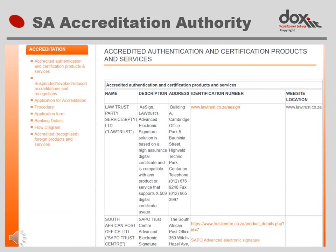The page on the South African Accreditation Authority website lists the certification authorities from which a certificate can be bought that will be legally valid within South Africa. The list is not very long — it includes only two options. At the bottom, you will see the South African Post Office. The ECT Act states that the Post Office shall be an accredited certification authority. So in reality, at the moment, there is only one private company which has been accredited to sell certificates. It is a company called Law Trust, with offices in the Highveld Technopark in Centurion in Gauteng. Obviously, this information is not static, and by the time you watch this video, it might have changed.